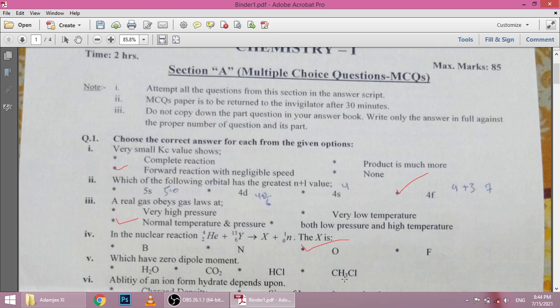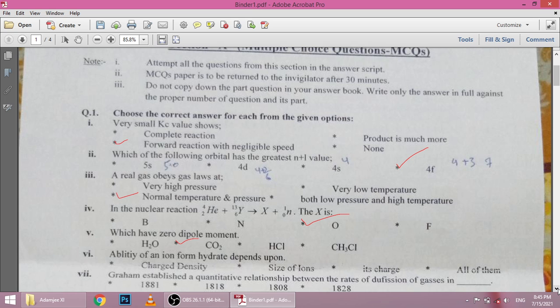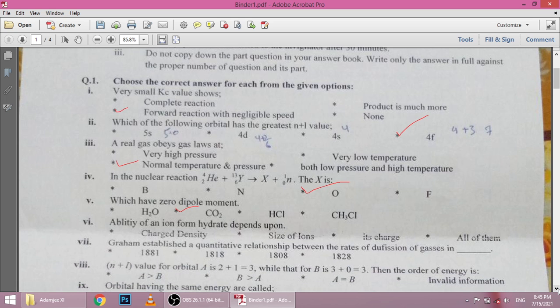Fifth is which has zero dipole moment. So zero dipole moment, we have carbon dioxide CO2 because of linear shape. Sixth is ability of an ion to form hydrate depends upon charge density, size of ions and charge separate. So D option is all of them.